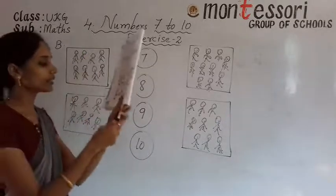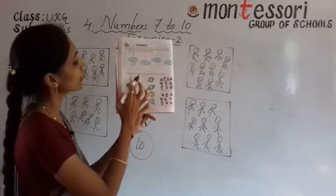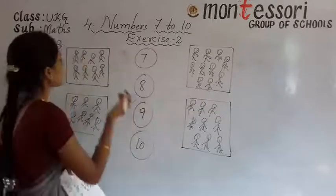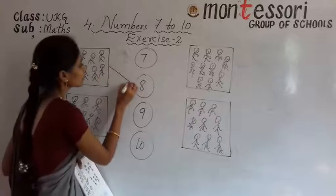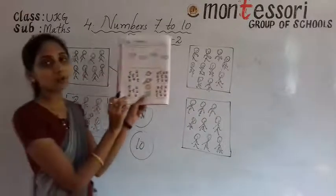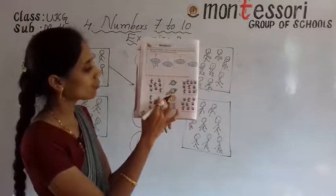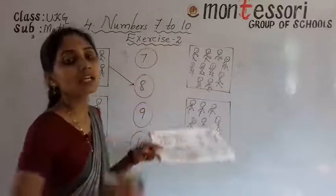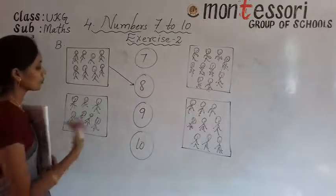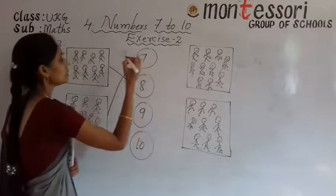So in the first box, how many toys are there? Shall we count, children? 1, 2, 3, 4, 5, 6, 7, 8. So you have to match to the number 8. Next, in second box, how many toys are there? 1, 2, 3, 4, 5, 6, 7. In second box there are 7 toys. So where is the number 7? Here it is. So you have to match to the number 7.